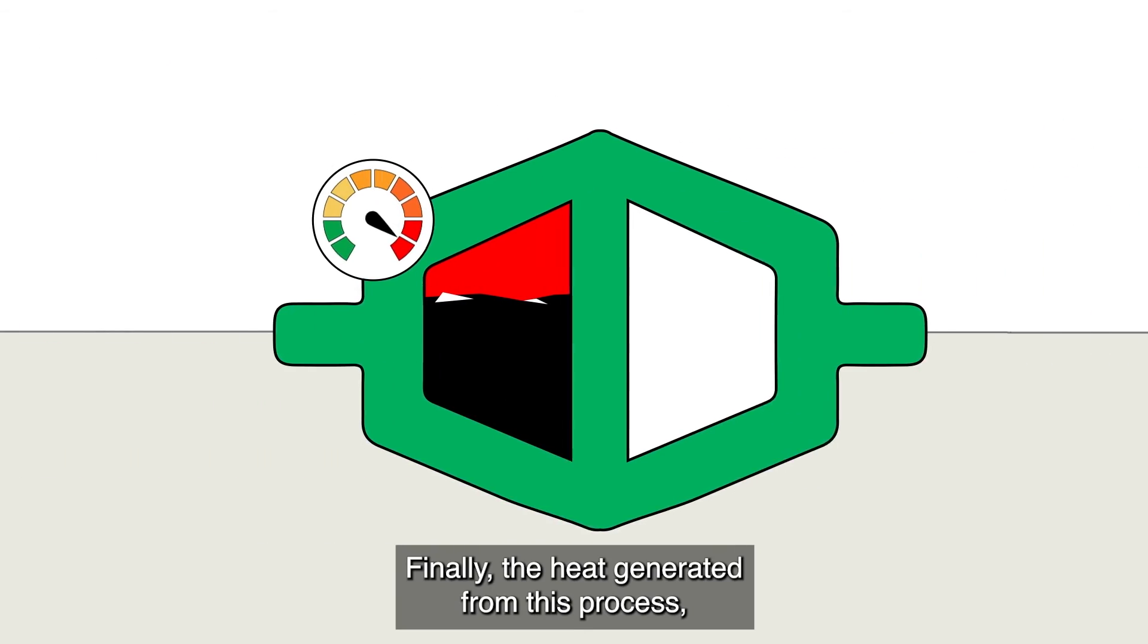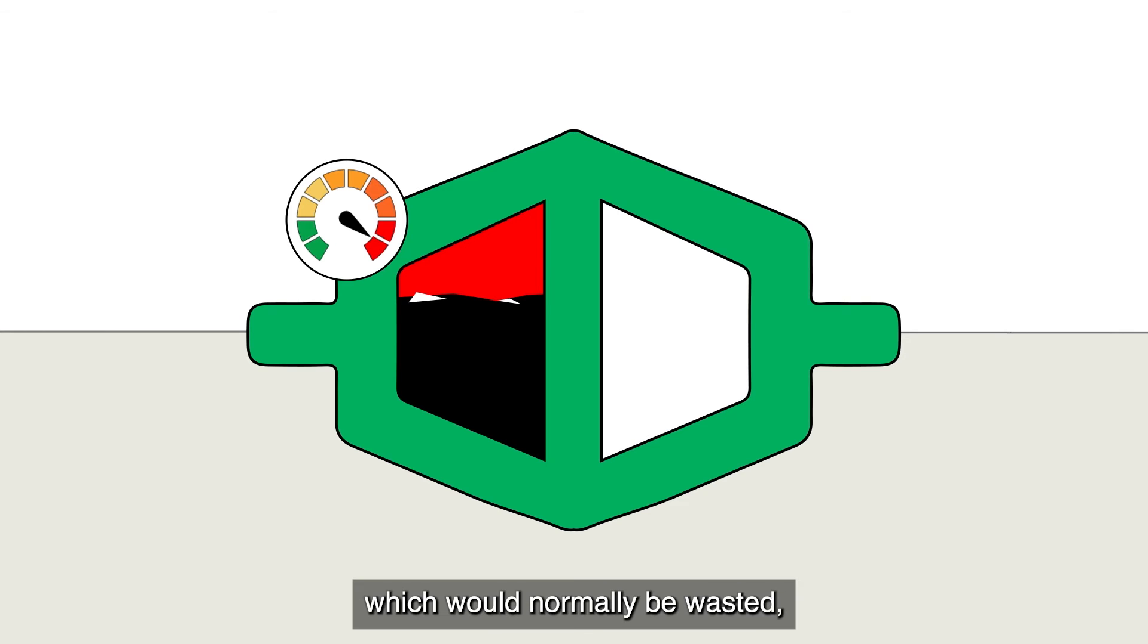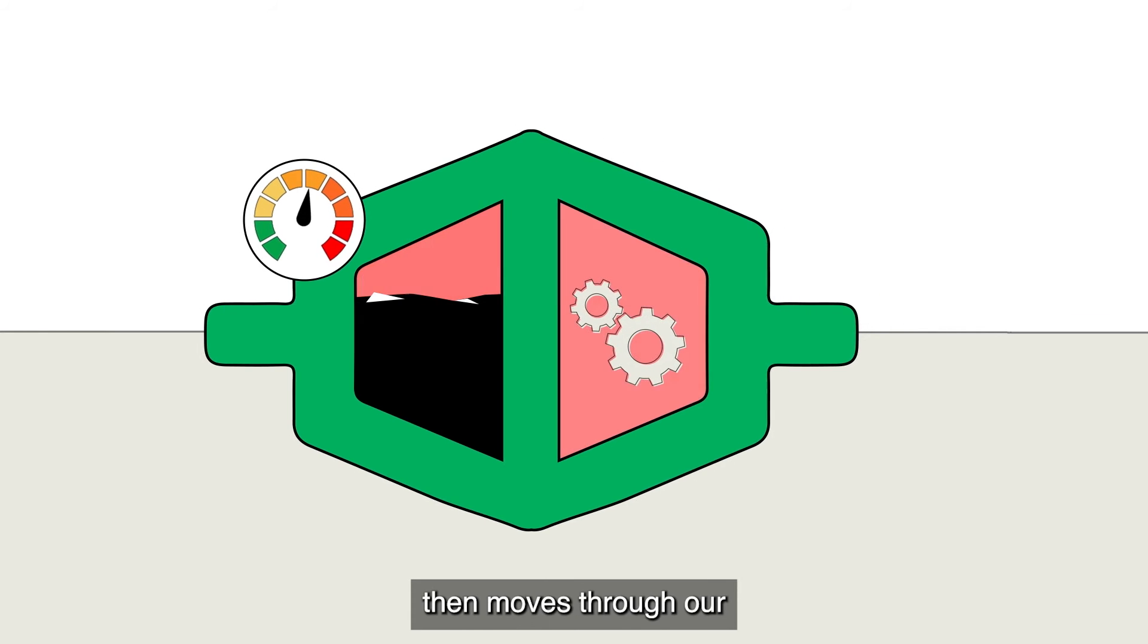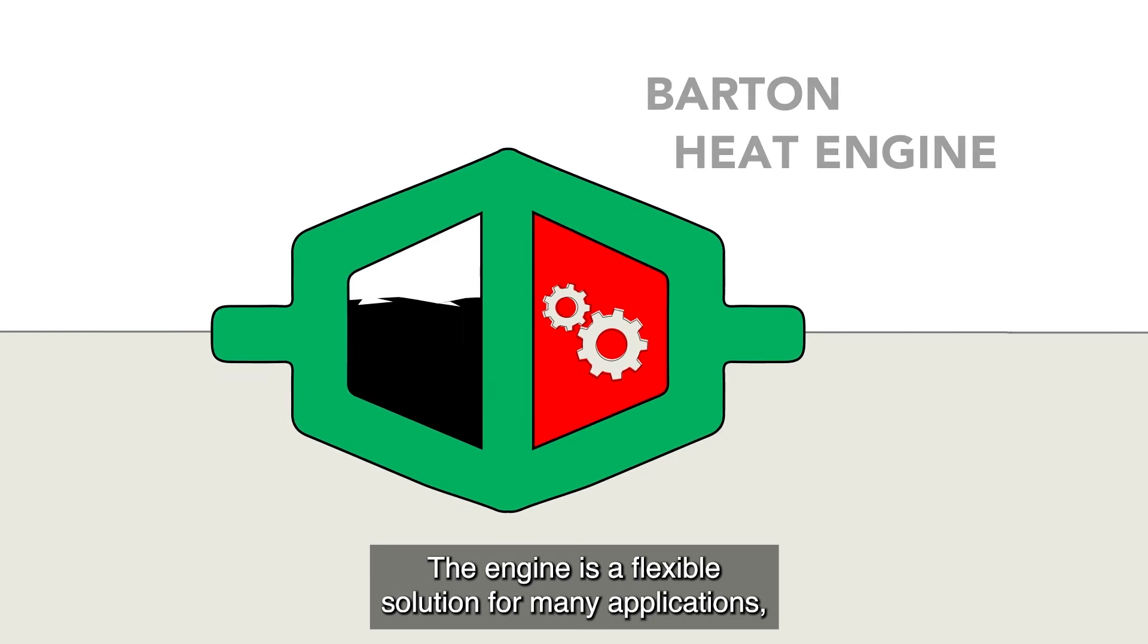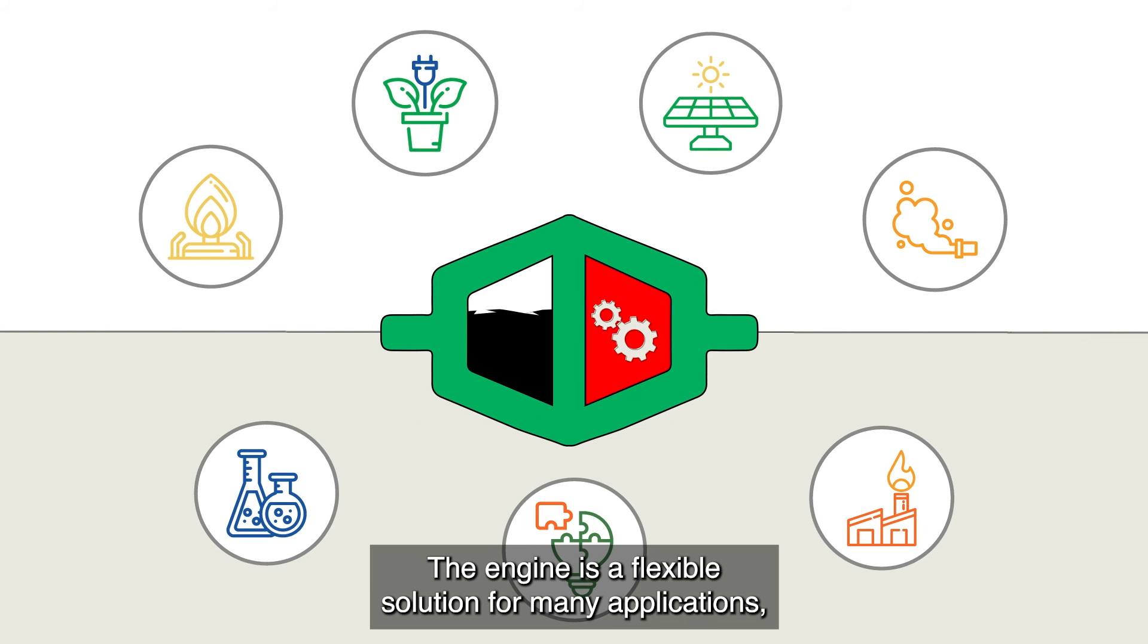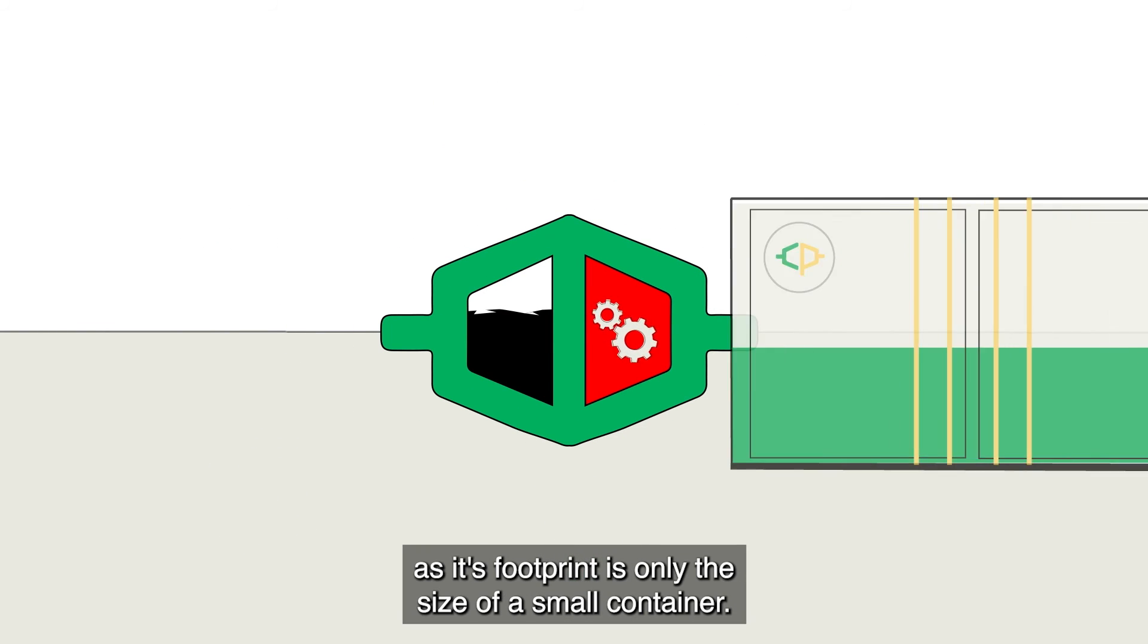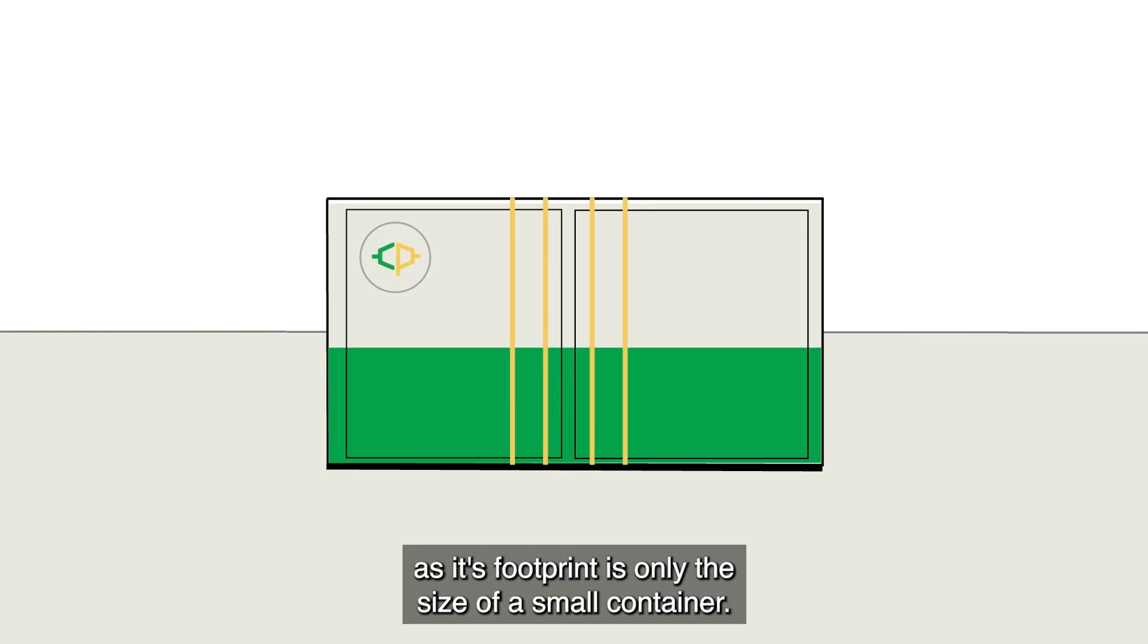Finally, the heat generated from this process, which would normally be wasted, then moves through our compact patent-pending Barton heat engine. The engine is a flexible solution for many applications, as its footprint is only the size of a small container, and it's proudly manufactured in Australia.